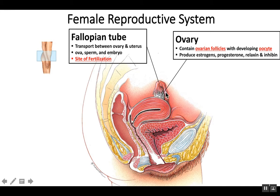As the oocyte travels down the fallopian tube, sperm could be traveling from the uterus towards that oocyte. Therefore, the fallopian tube serves as the site of fertilization. It also serves as the location for early embryonic development — before that embryo enters the uterus, it develops for many days in the fallopian tube.